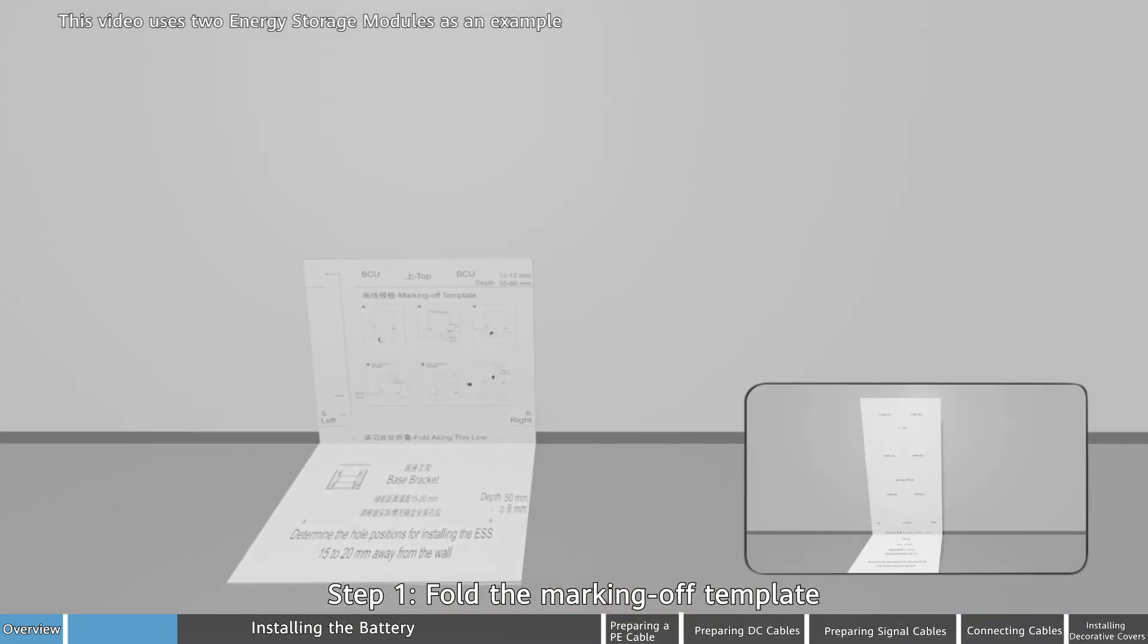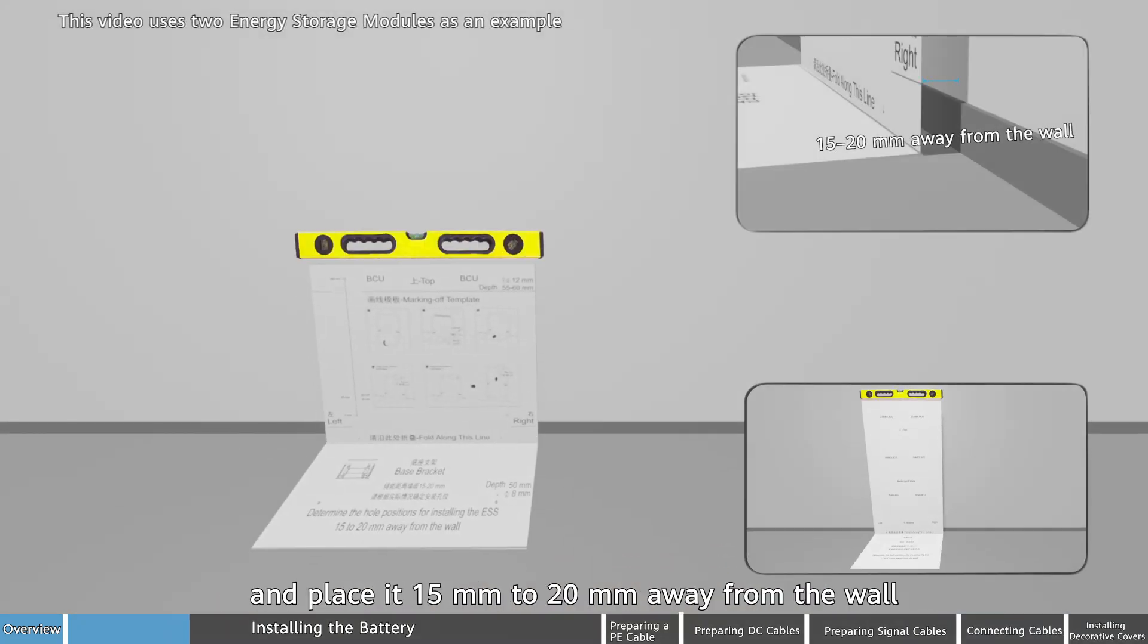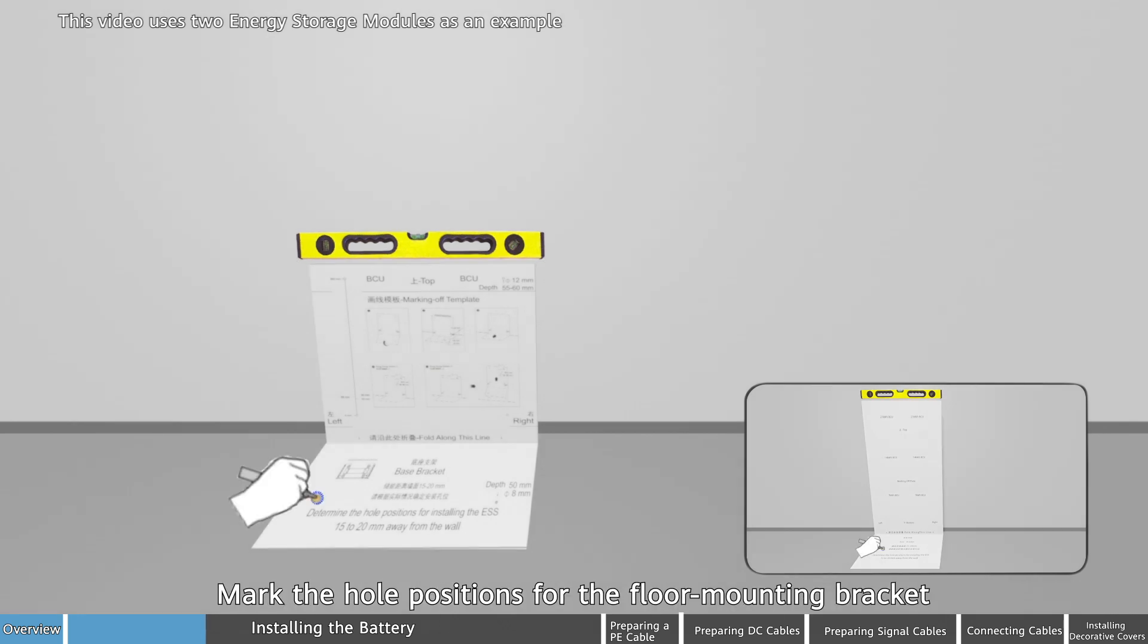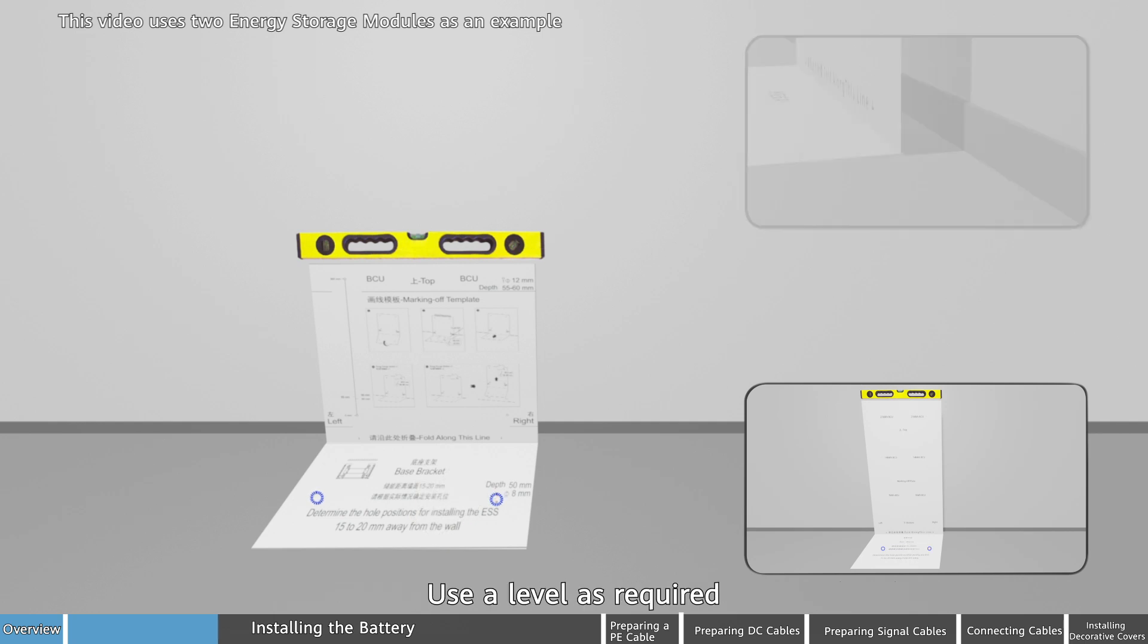Step 1: Fold the marking off template and place it 15mm to 20mm away from the wall. Mark the hole positions for the floor mounting bracket. Use a level as required.